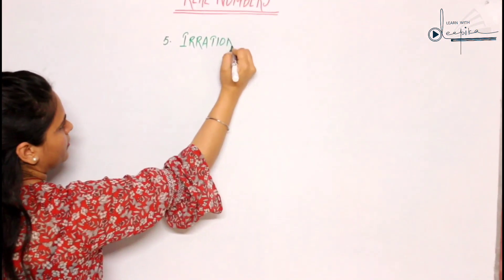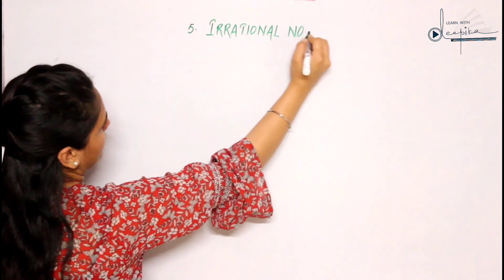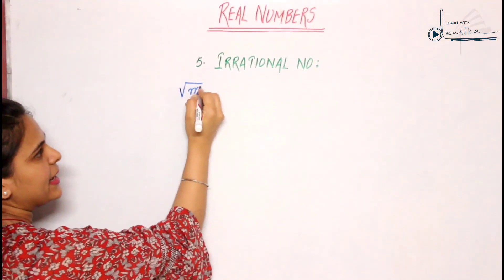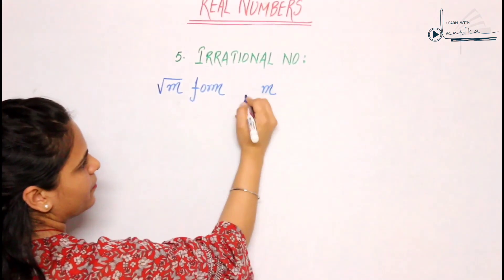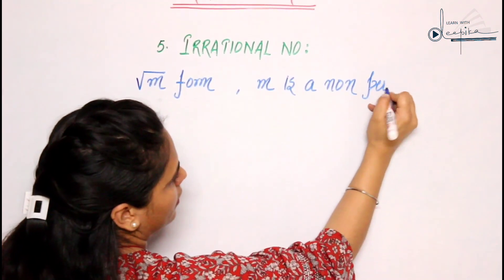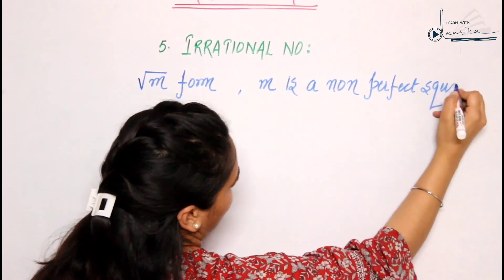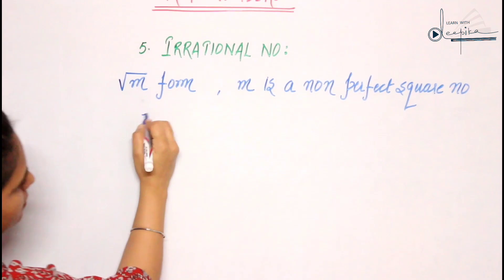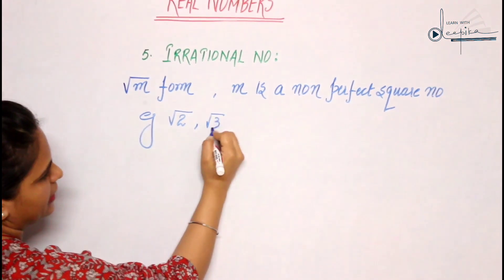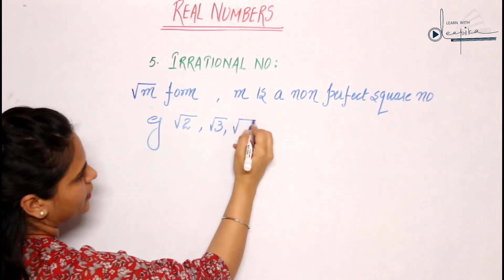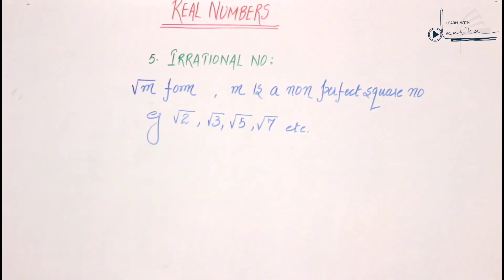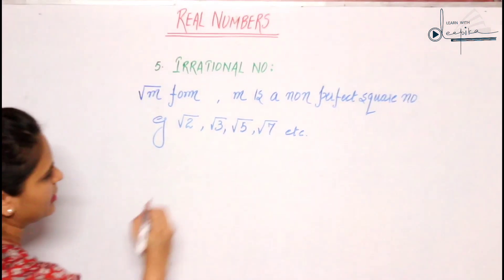Now, next is irrational numbers. Irrational numbers can be represented in root M form, whereas M is a non-perfect square number. For example, M can be 2, so root 2; root 3; not root 4 because 4 is a perfect square; then root 5, root 7, etc. I'll explain irrational numbers by using a flow chart of decimal expansion.